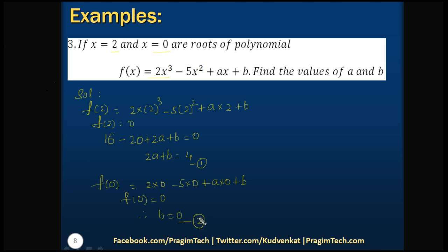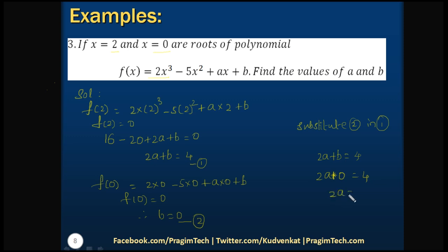Now substitute the value of B into equation 1. That is 2A + B = 4, substituting B = 0 gives 2A + 0 = 4, so 2A = 4, which means A = 4/2 = 2. Therefore A = 2 and B = 0.